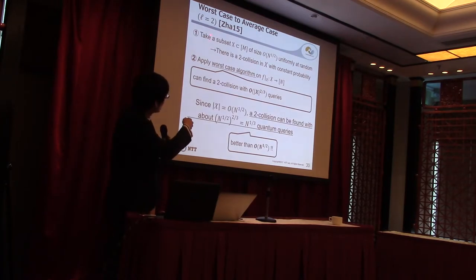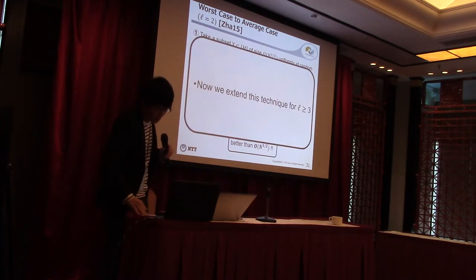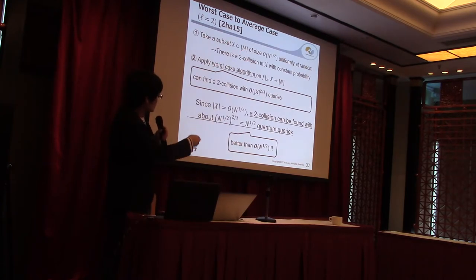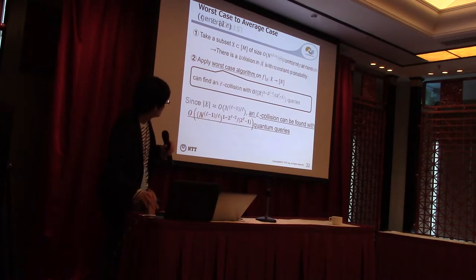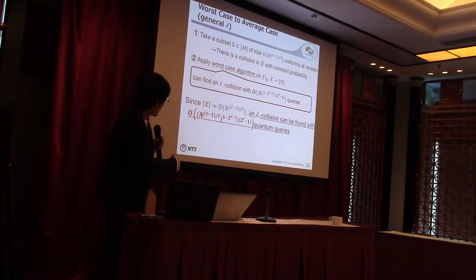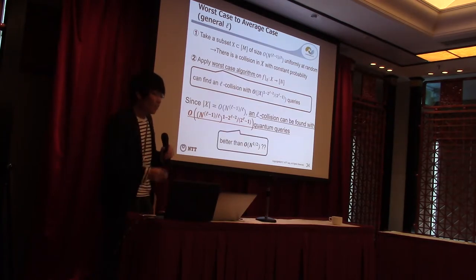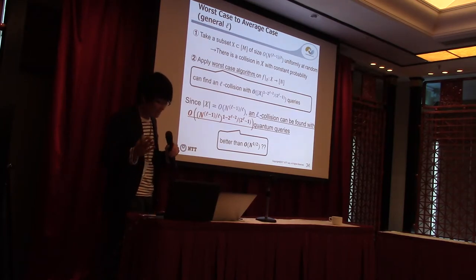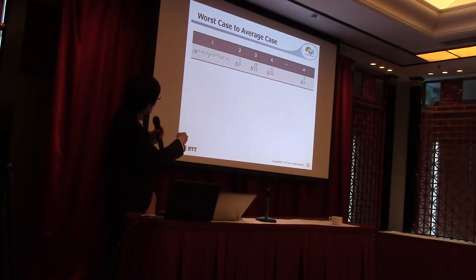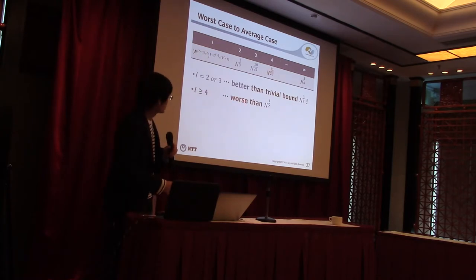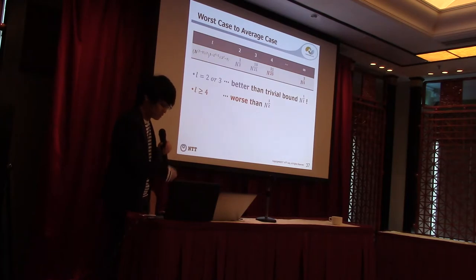I extend this technique to the case L ≥ 3. For general L, modifying the algorithm yields a bound of order n to the power ((L-1)/L) to the power (1 - 2^(L-2)/2^(L-1)), which is very complex. The question is: is it better than the trivial bound of order n to the power 1/2? If L is 2 or 3, this bound is better than the trivial bound. However, for L ≥ 4, the bound becomes worse than the trivial bound. So a new quantum algorithm is needed for L ≥ 4.